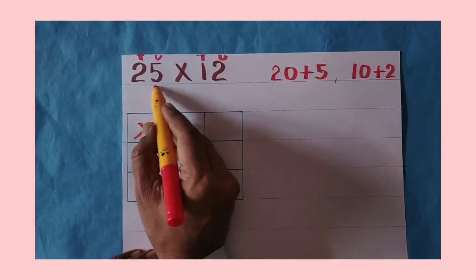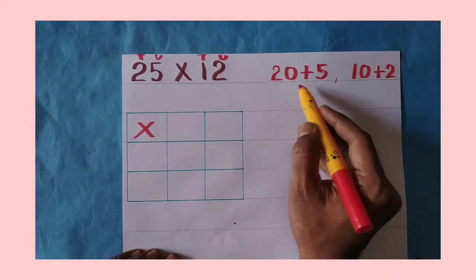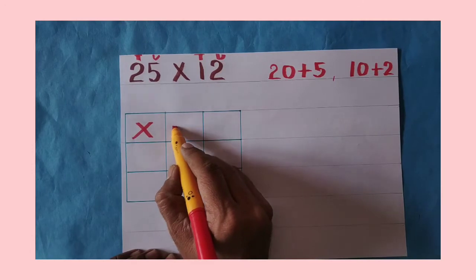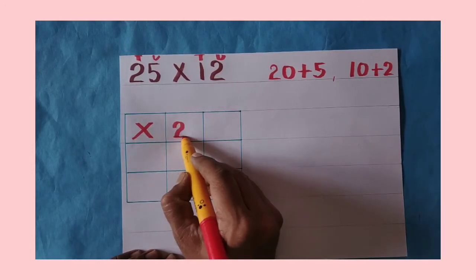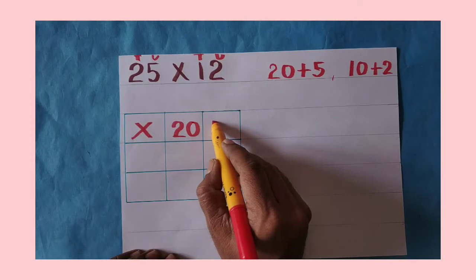The first number is twenty-five. Twenty-five means twenty plus five. So, we need to write twenty. Then, we need to write five.